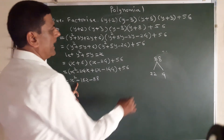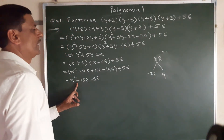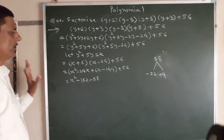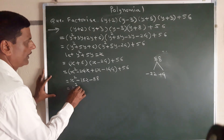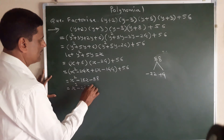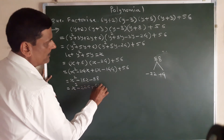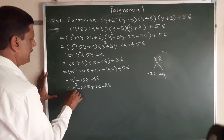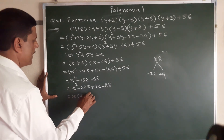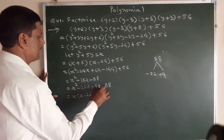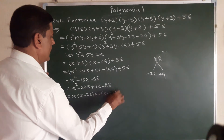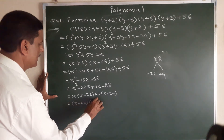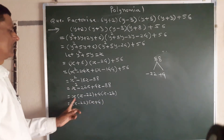We factorize x squared minus 18x minus 88 by finding factors of 88 whose difference is 18. Those are minus 22 and plus 4, since minus 22 plus 4 equals minus 18. So we write x squared minus 22x plus 4x minus 88. Taking common factors: x(x minus 22) plus 4(x minus 22) gives (x minus 22)(x plus 4).